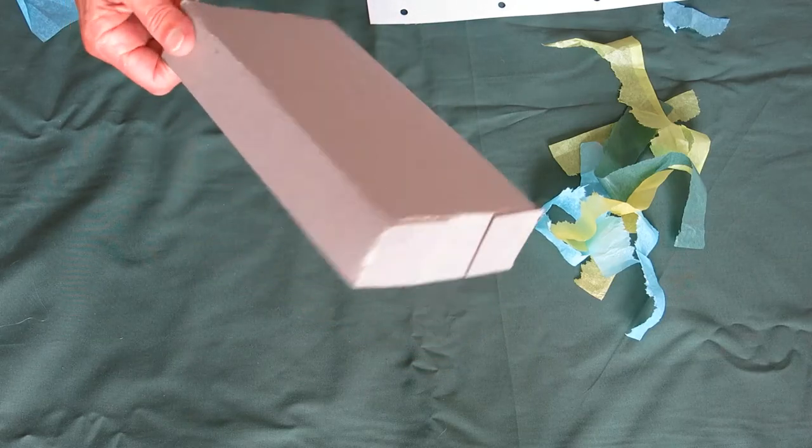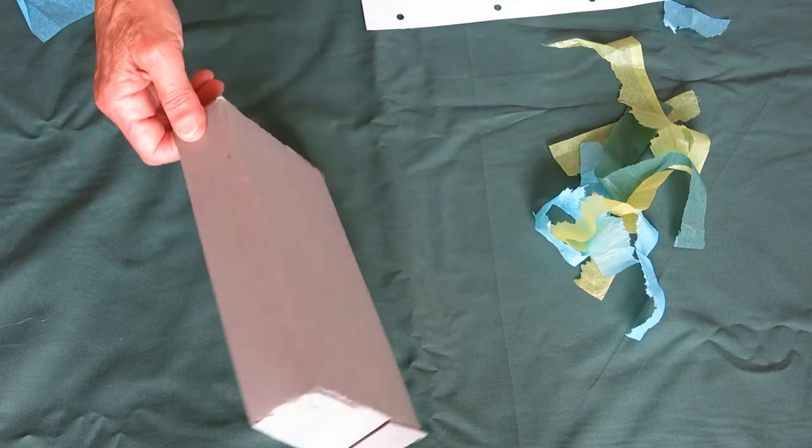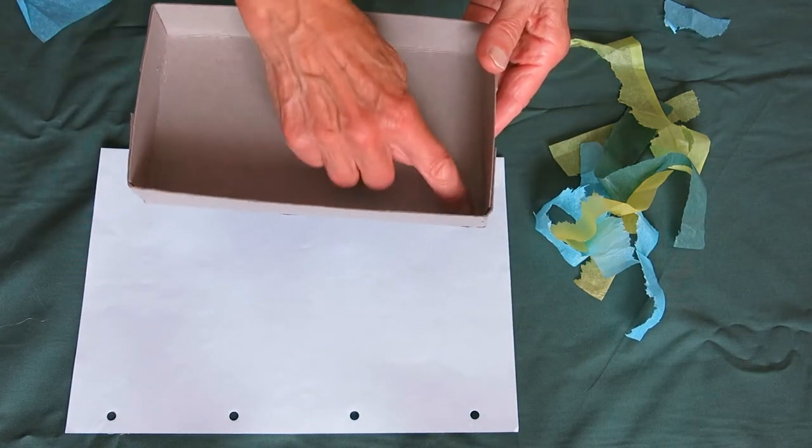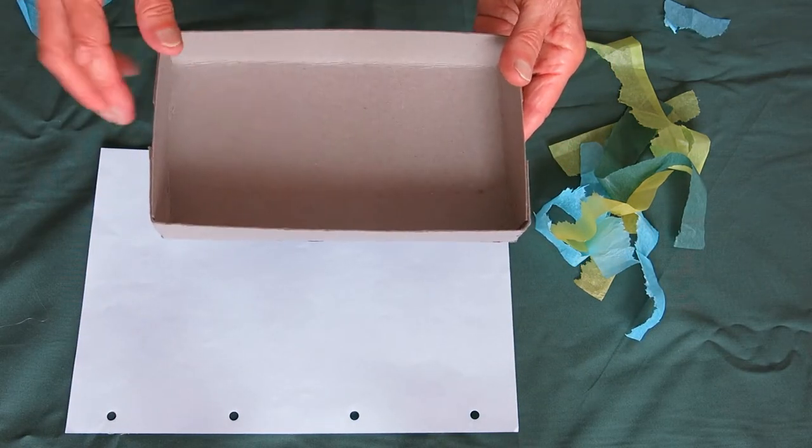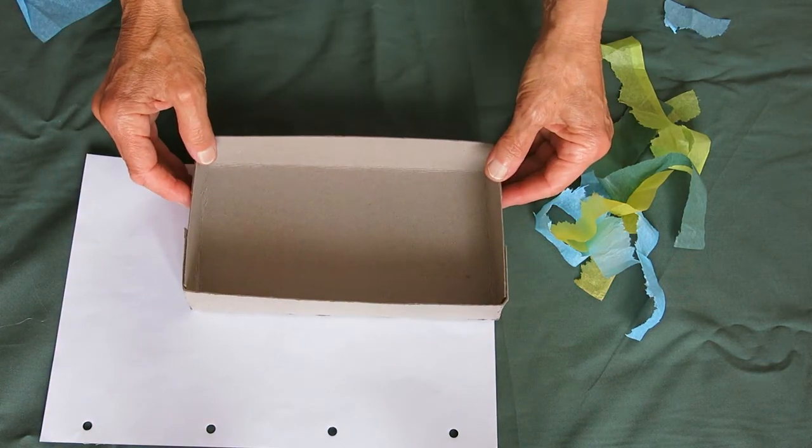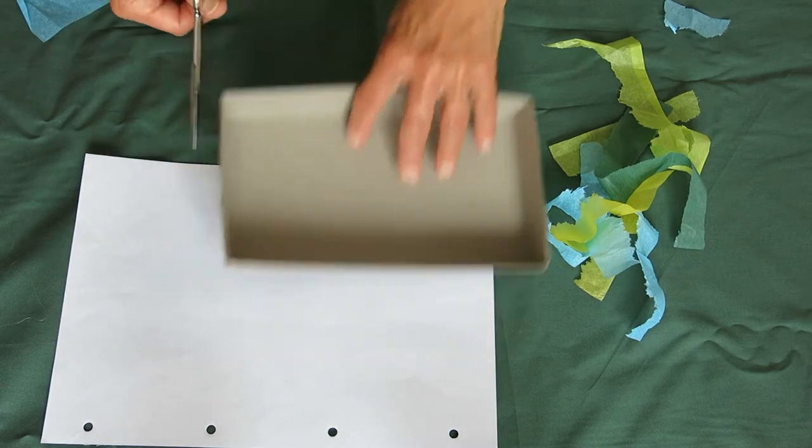First you're going to need a box. An old cereal box would be fine. This is a slightly smaller one but that's okay too. You want to make a background picture for your case, so if you put your box onto a piece of plain paper and draw around it, and then cut it out.